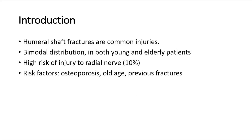Humeral shaft fractures are common injuries. Like many orthopedic injuries, they have a bimodal distribution, occurring in both younger patients due to high-energy trauma and in elderly patients following low-impact injuries. Due to the location of the radial nerve within the spiral groove, there is a reasonably high risk of nerve injury. Risk factors include osteoporosis, increasing age, or previous fractures.